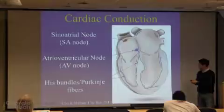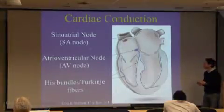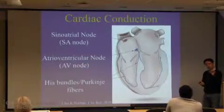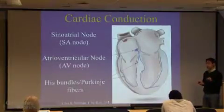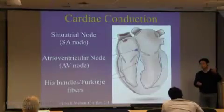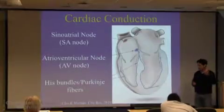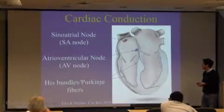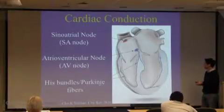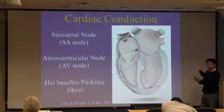That sinoatrial node — I'm going to call it the SA node throughout this talk — harbors specific and very specialized cells called pacemaker cells. These pacemaker cells do not need any encouragement. They fire an electrical stimulus every time to keep our heart rhythm. That electrical stimulus spreads around the atrial myocardium, the right and left atrial myocardium, because we're looking at the heart from the front.